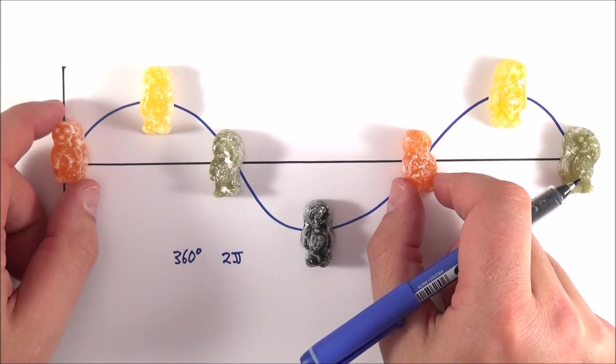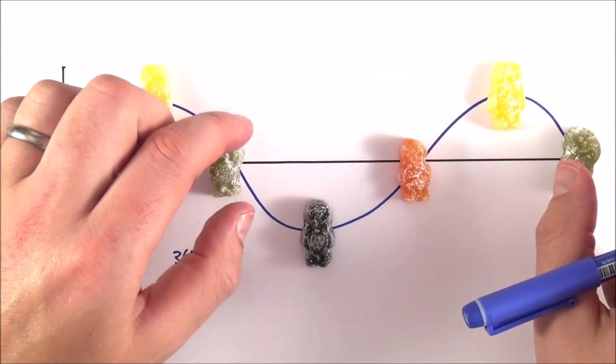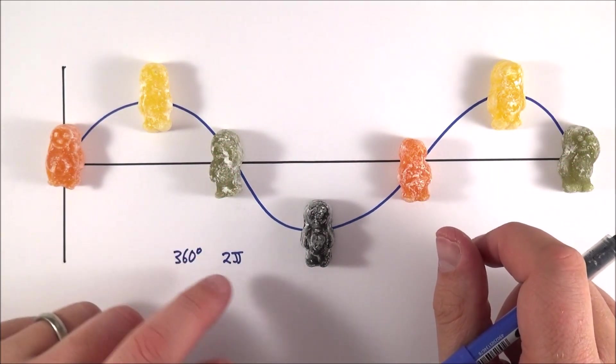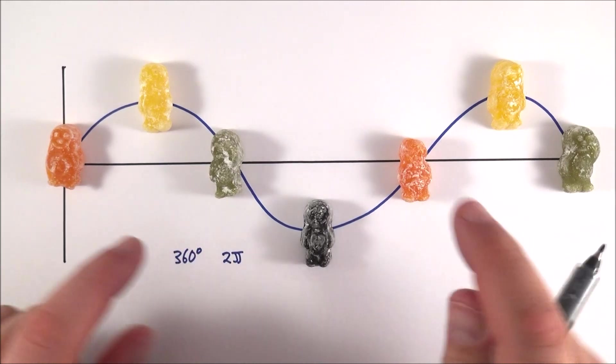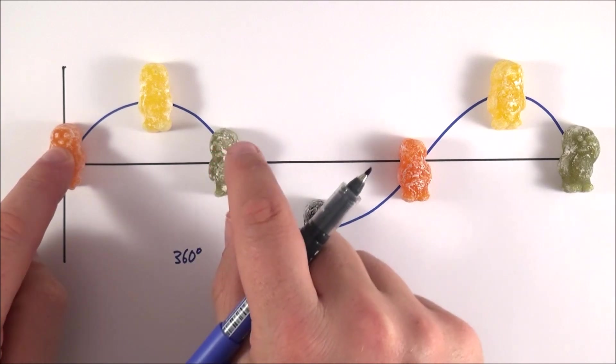As this one goes up, this one also goes up and down at the same time, and the same with the two yellow ones and the two green ones. Things which are in phase are 360 degrees apart or 2π radians. But these two things here have half a wavelength between them, and that means that they are out of phase.